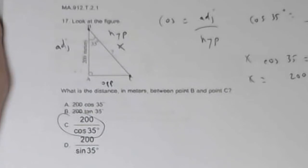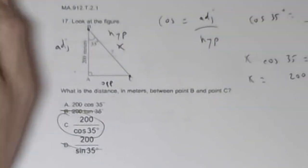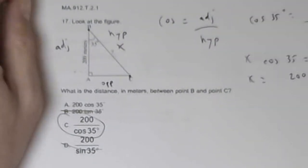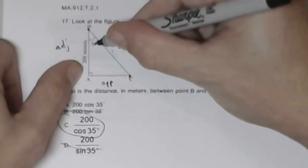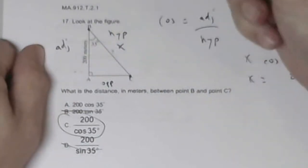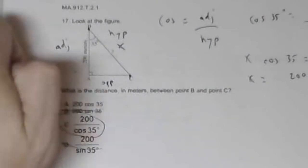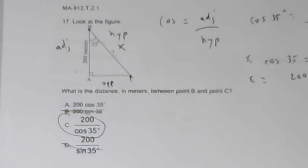I can eliminate tangent and sine because I need something that relates to the knowns I have — this angle and this side length. You could also write it with secant, but that's okay.